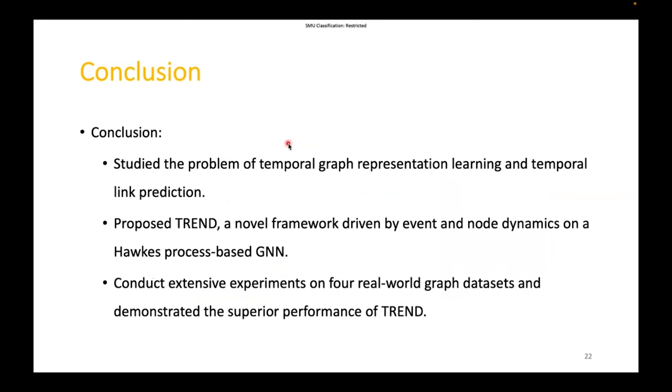In this paper, we study the problem of temporal graph representation learning. Specifically, we propose TREND, a novel framework for temporal graph representation learning driven by event and node dynamics on a Hawkes process based GNN. TREND is inductive and able to capture a holistic view of the link formation process. More importantly, it integrates both the event and the node dynamics to respectively capture the individual and collective characteristics of events for a more precise modeling of the temporal evolution. Finally, we conducted extensive experiments on four real-world datasets and demonstrated the superior performance of our TREND. That's all. Thank you for your attention.